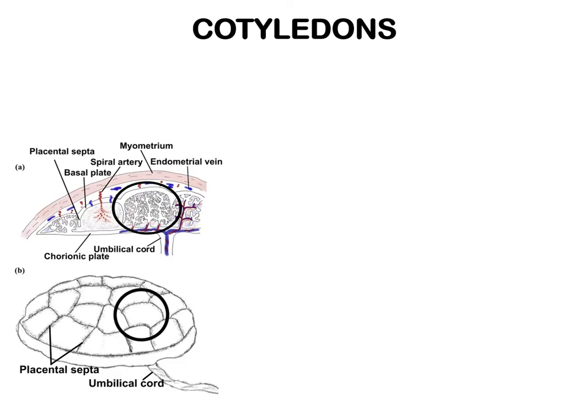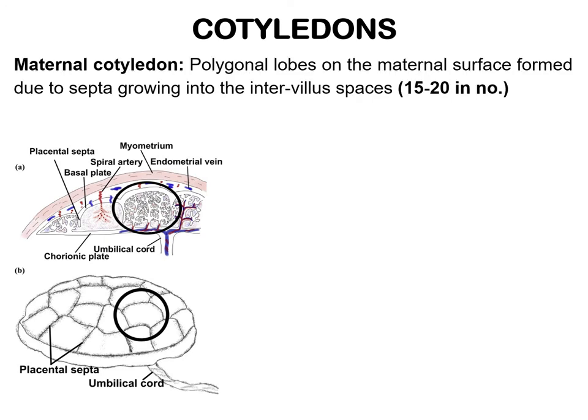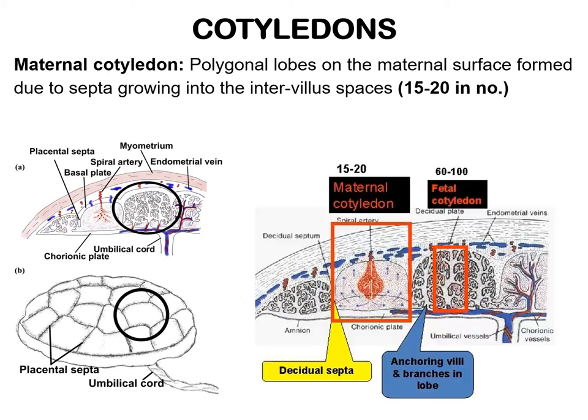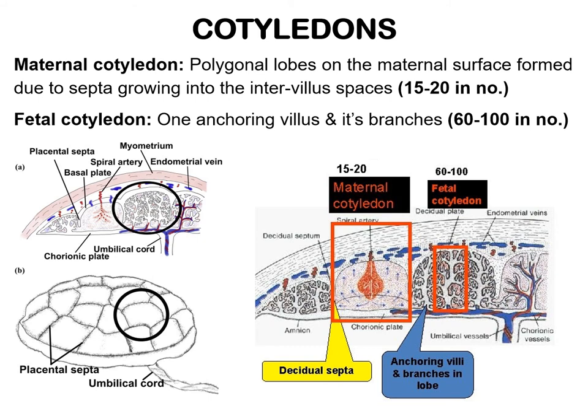Maternal cotyledons are polygonal lobes on the maternal surface of the placenta. They are 15 to 20 in number and are formed by the septa which grow into the intervillus spaces. Each maternal cotyledon contains 2 to 4 anchoring villi and their branches. On the other hand, one anchoring villus and its branches constitute a fetal cotyledon. Thus, the fetal cotyledons are 60 to 100 in number.